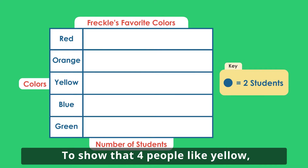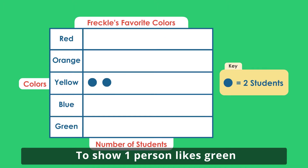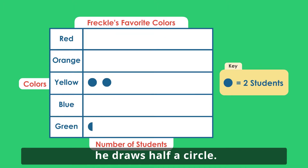To show that four people like yellow, he draws two circles. To show one person likes green, he draws half a circle.